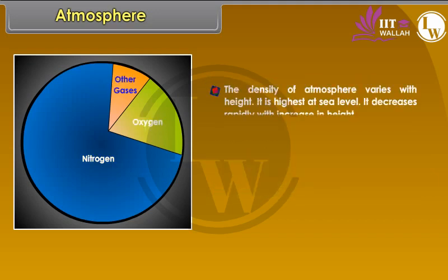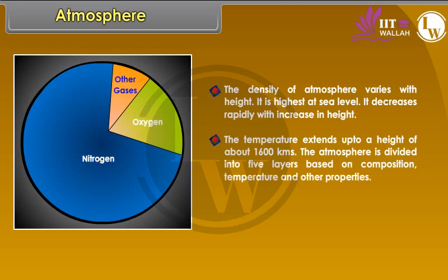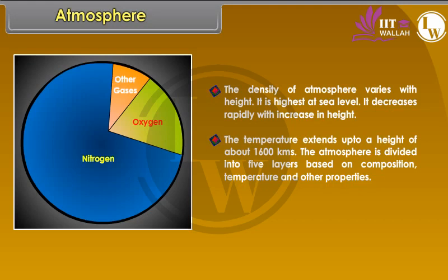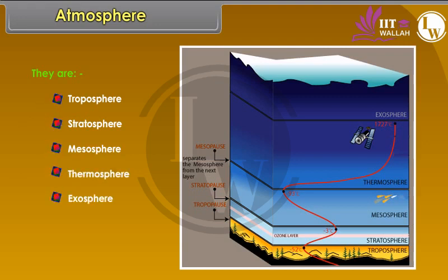The density of the atmosphere varies with height. It is highest at sea level and decreases rapidly with increase in height. The atmosphere extends up to a height of about 1,600 km. The atmosphere is divided into five layers based on composition, temperature and other properties. They are troposphere, stratosphere, mesosphere, thermosphere, and exosphere.